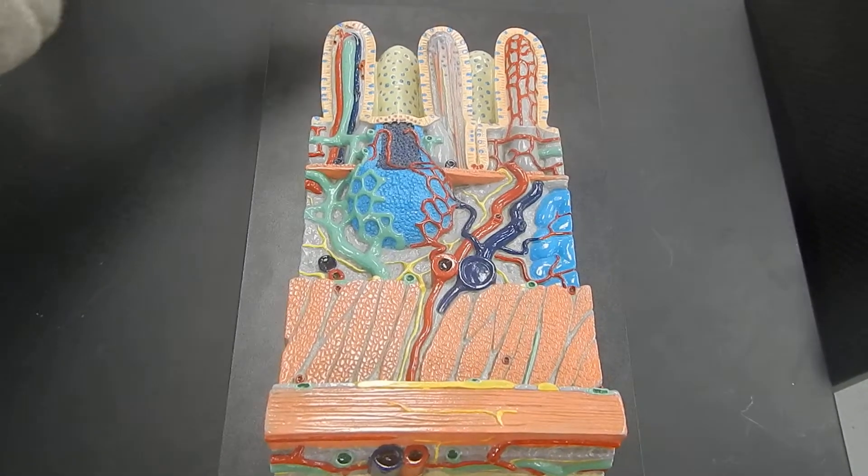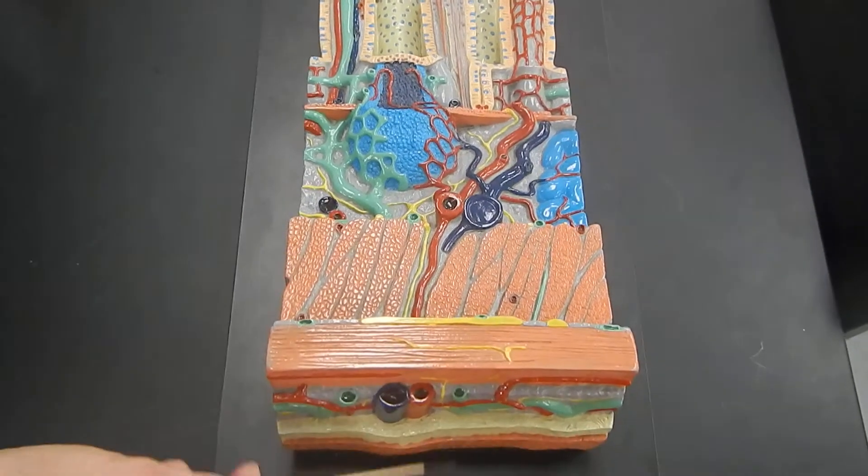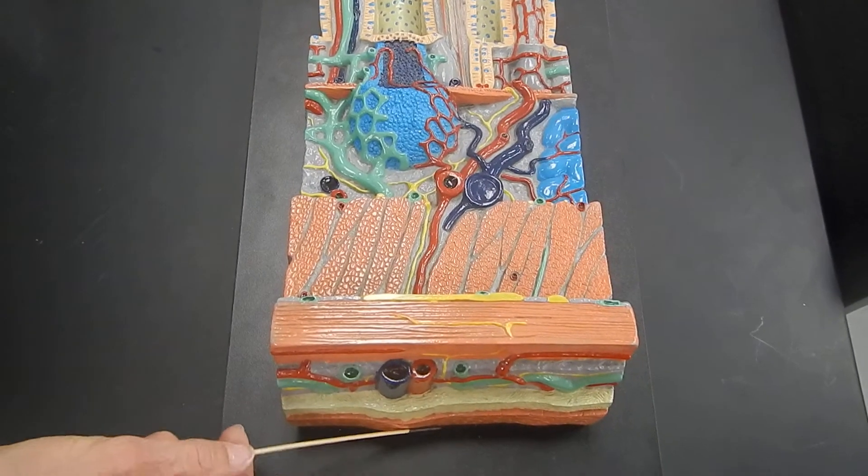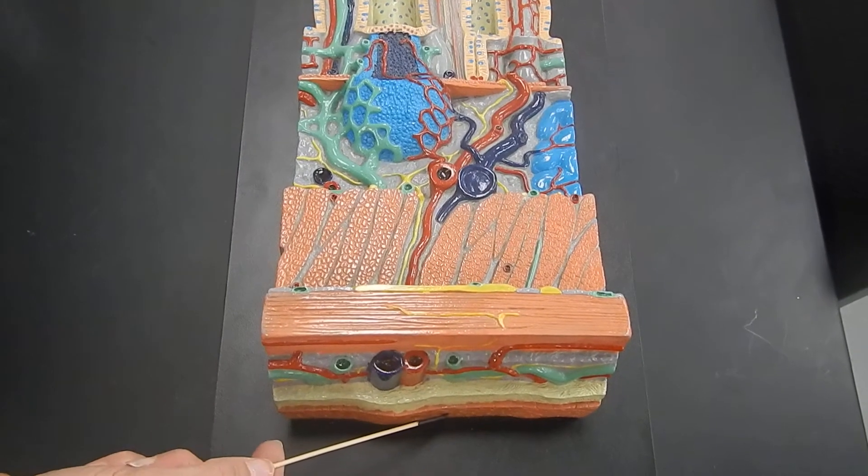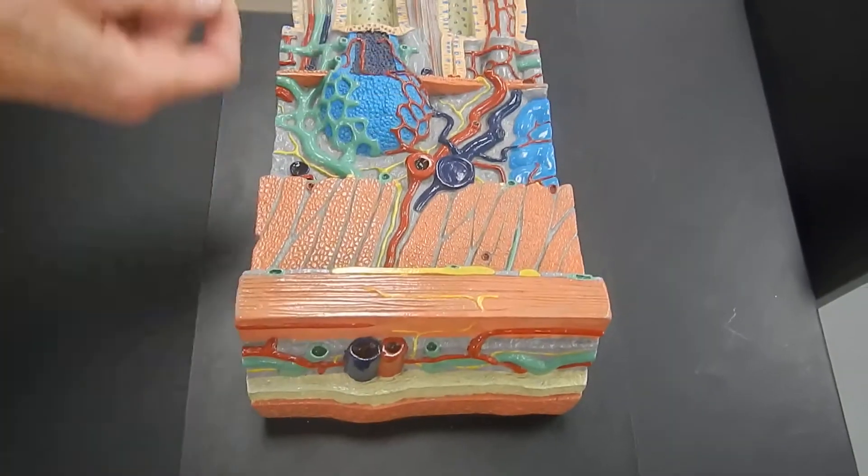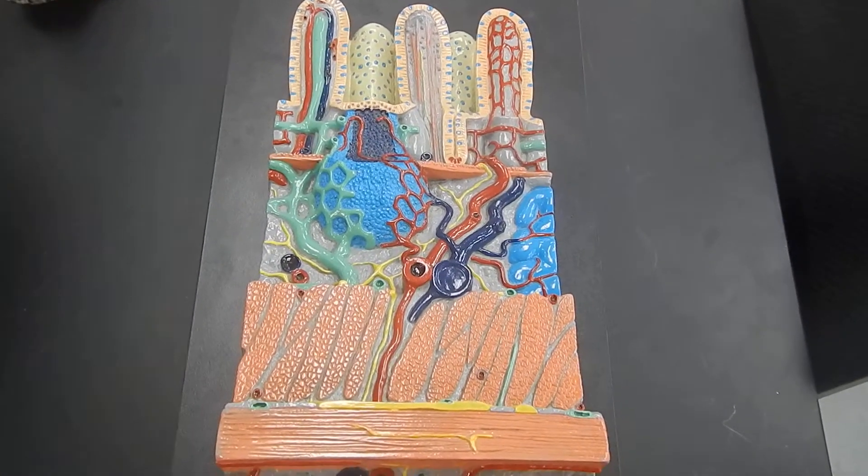Your food would be traveling over here and out here. This would be the area that a surgeon might touch if they were moving around your intestines. So this is the wall of the small intestine.